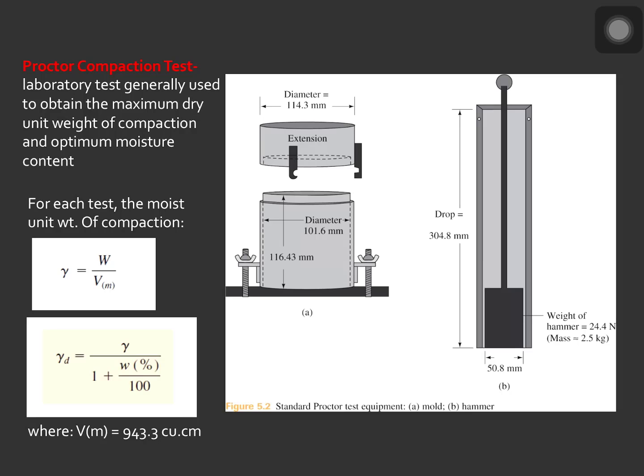For each test, the moist unit weight of compaction is equal to W over V sub M, where W is equal to the weight of compacted soil in the mold and V sub M is the volume of the mold equal to 943.3 cubic centimeters.